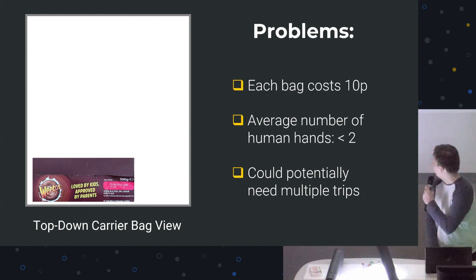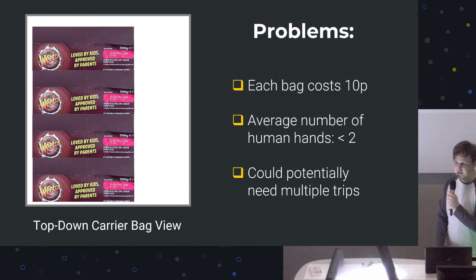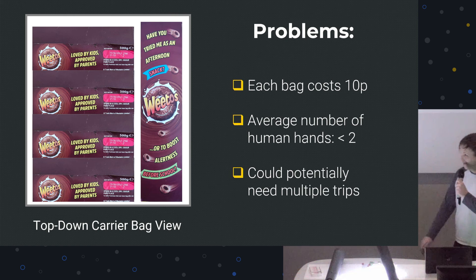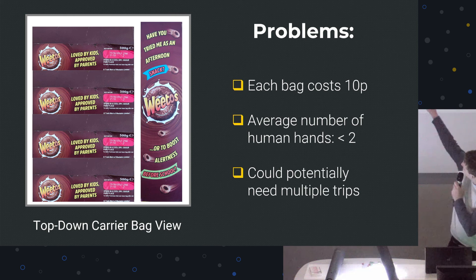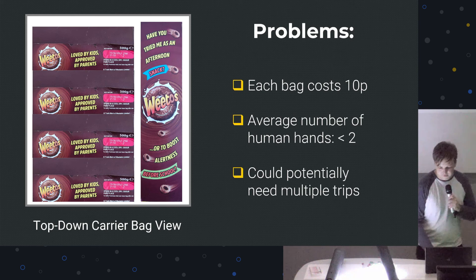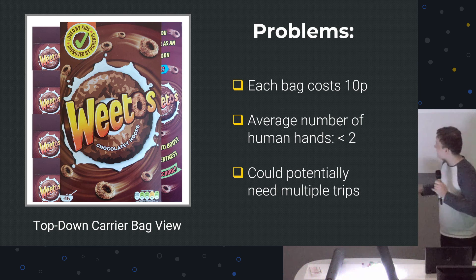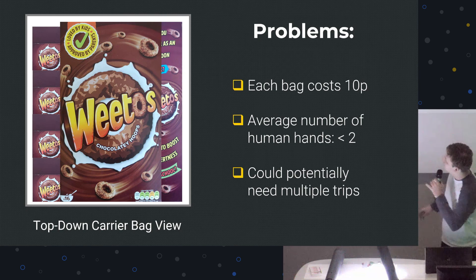I can fit one here, and here, and here, and here. Oh no, I've run out of space. Oh no, I haven't. Three dimensions exist. I can fit one here. And in fact, there's a little bit of space at the top of our bag, so I can actually fit one on top like this as well. So we've done it. We've managed to fit, well, some of the Weetos. We need more bags.